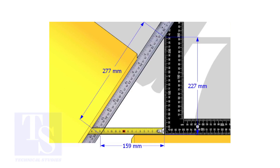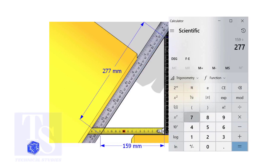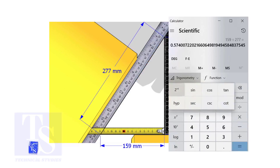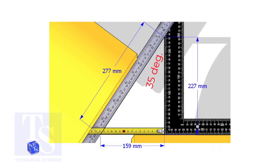Let us calculate the including angle. If you apply the sine rule, the angle will be 159 divided by 277, then shift sine. So the answer is 35 degrees.